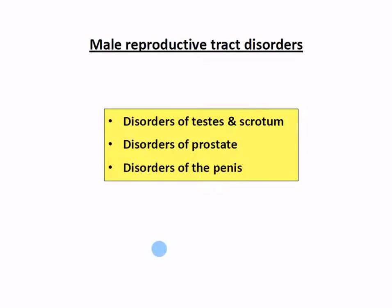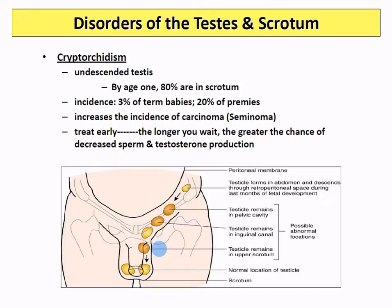Now let's talk about male disorders - testes and scrotum, prostate, and penis. Starting with cryptorchidism, or undescended testes: by about age one, 80% of males have testes already in their scrotum. The major group to worry about are premature babies. If they're not descended by age one, surgery is usually done to move them. A common outcome whether surgery is done or not is infertility. About 3% of regular babies and 20% of preemies will have undescended testes.